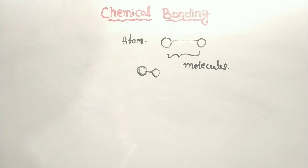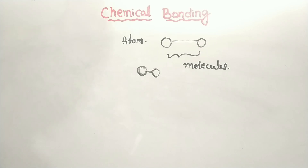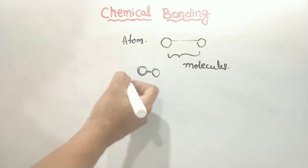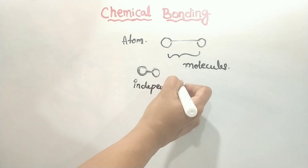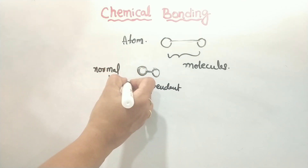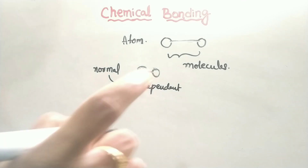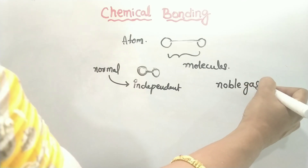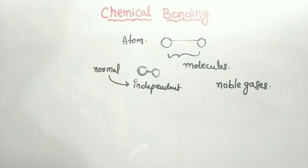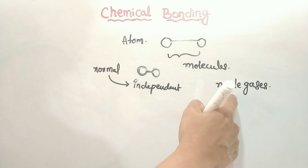Matter is made up of one or more different types of elements. Under normal conditions, no other elements exist as an independent atom in nature. This element is independent in nature — except the noble gases. The noble gases are independent in nature, and we can observe bond formation in nature.